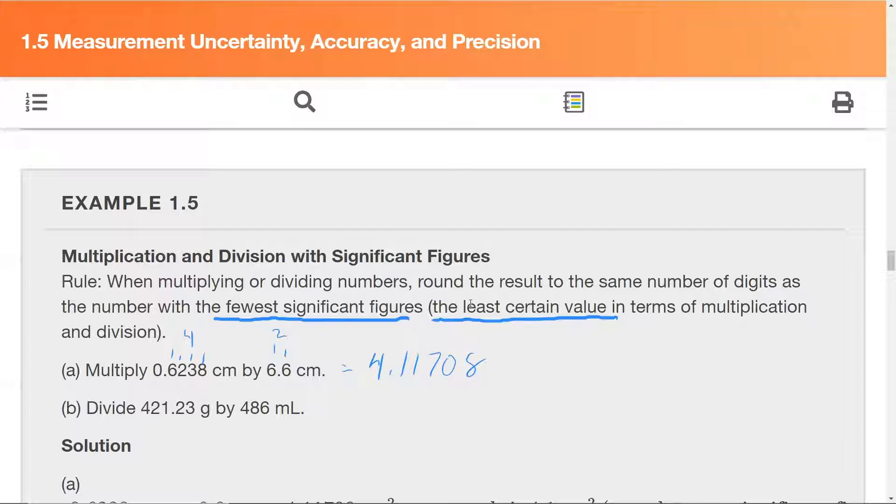That's way too many numbers. We have to go with the least number of significant figures. So this is the place we want to round to. The number before that is a one, so we just drop everything after that. And it is 4.1. What were the units here though? So these were centimeters times centimeters. And so this is going to be centimeters squared.